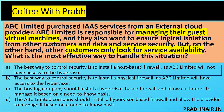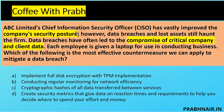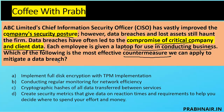Next coffee shot: ABC Limited's CISO has vastly improved the company's security posture, but data breaches and lost assets still haunt the firm. Data breaches have led to compromise of critical company and client data. Each employee is given a laptop for conducting business. Which of the following is the most effective countermeasure to mitigate data breaches? Laptops are always prone to theft, and what is needed is persistent data security.